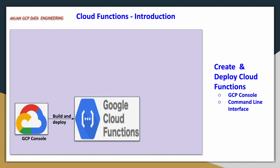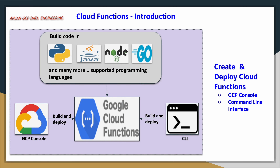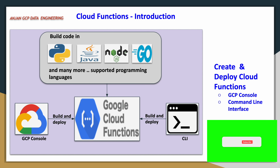In this demo, since it is an introductory video, we will write a simple piece of code and deploy the Cloud Function using Google Cloud Console and also via CLI command line interface. As already mentioned, it supports different programming languages — in this video we will use only Python, but you can also use Java, Node.js, or Go. Now let us quickly move to the demo.